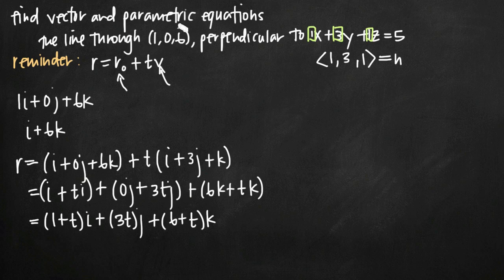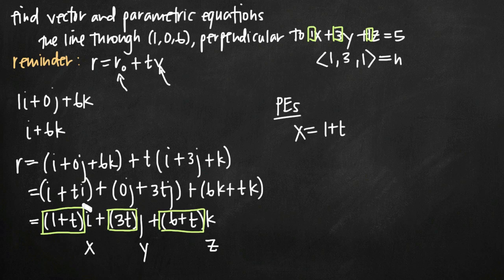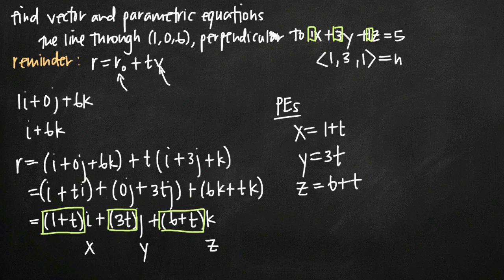Now I just need the parametric equations for the line, which come easily from the vector equation. I take the coefficients in front of i, j, and k — remembering that i, j, and k correspond to x, y, and z. That gives me: x equals 1 plus t, y equals 3t, and z equals 6 plus t. These are the parametric equations that define this line. That's how you find the vector and parametric equations when given a line passing through a point and perpendicular to a plane.